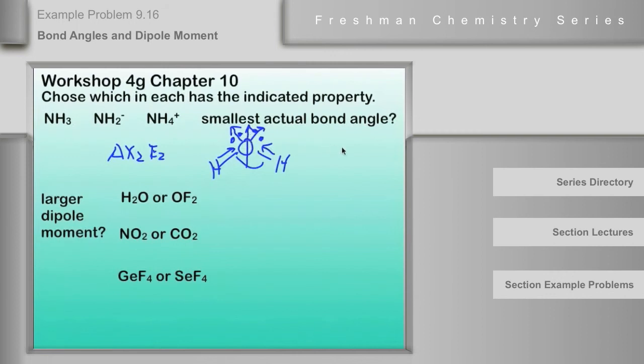But if we look at OF2, it has two lone pairs as well. Now, they have upwards pointing vector contributions. But now, let's look at what happens in the OF bonds. They point towards the fluorines because the fluorines are the most electronegative element. So we end up having a vector in this direction and a vector in that direction, and that will make for a small dipole moment.